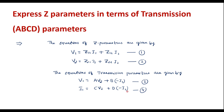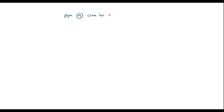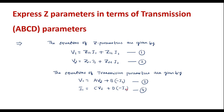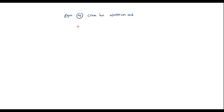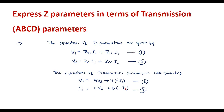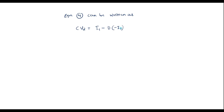Now I will try to express equation 4 equivalent to equation 2. Starting from equation 4: I1 = C·V2 + D·(−I2). Rearranging, C·V2 = I1 + D·I2, which simplifies to V2 = (1/C)·I1 + (D/C)·I2. I will call this equation 5.